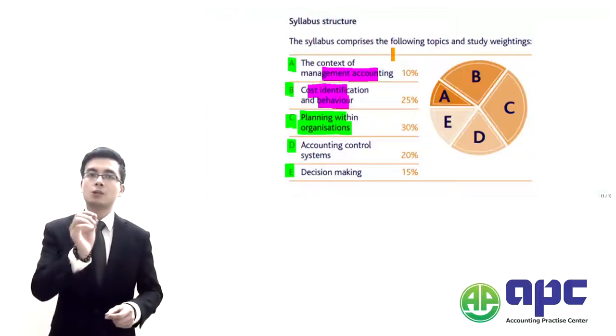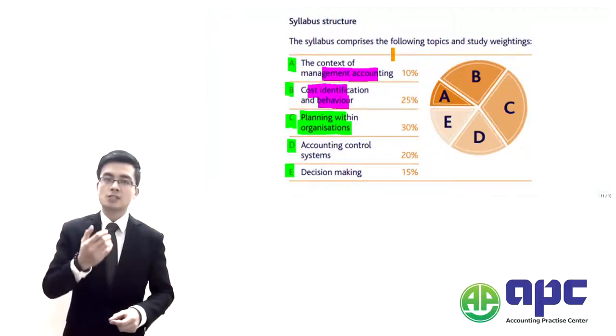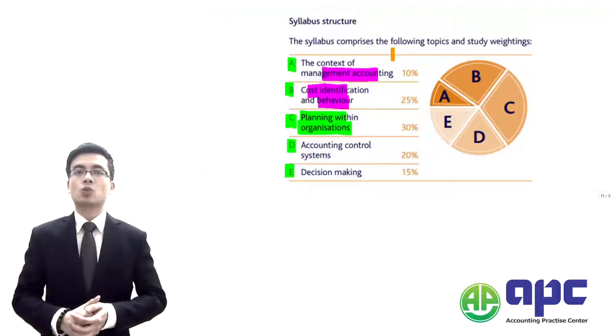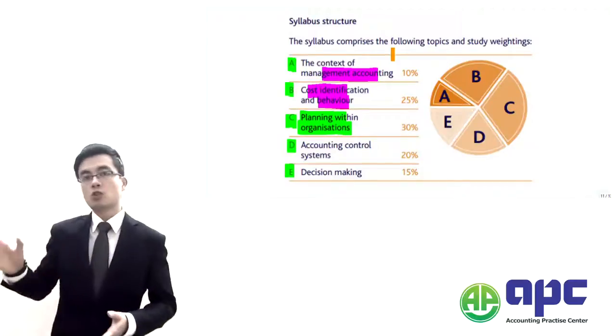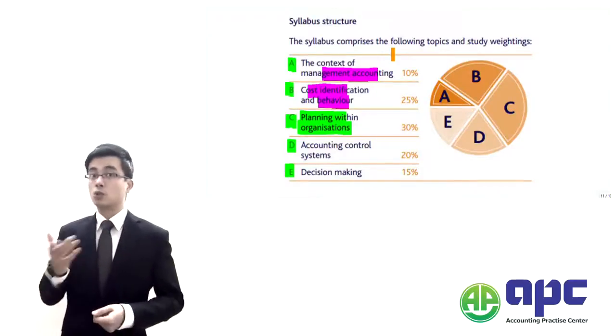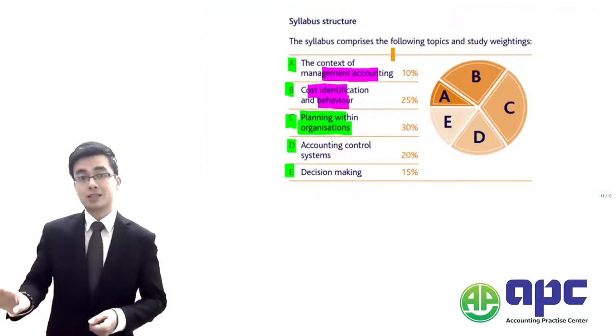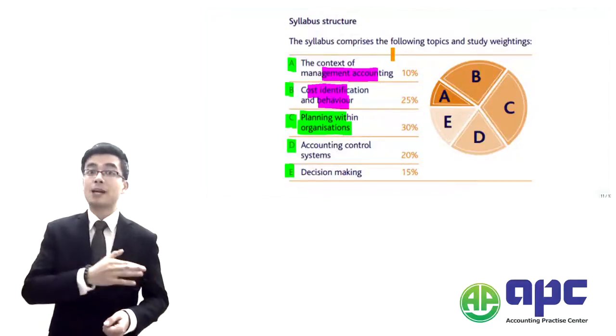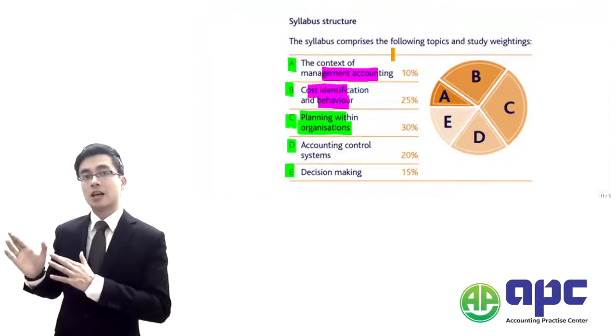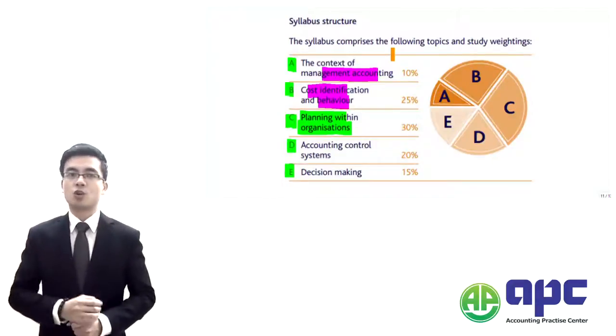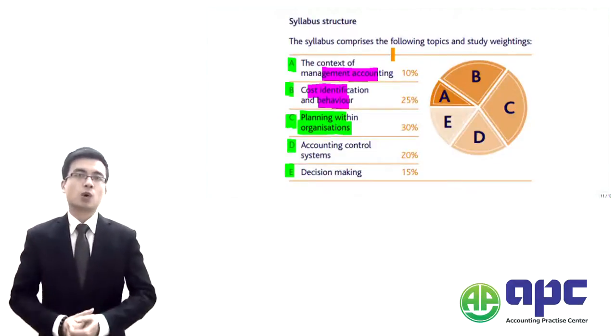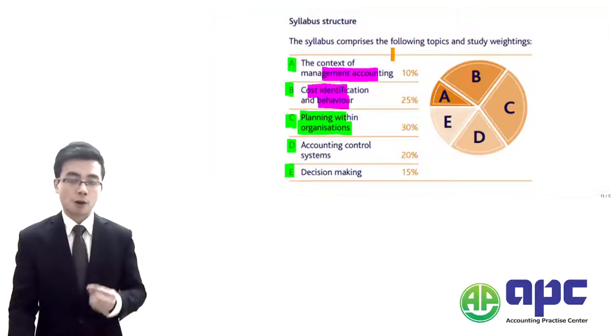What management accounting is going to do is try to adjust this particular situation by making some adjustments. For example, we're going to reward you with $3 as mentioned, but we're going to add the expenditures that we've spent that are not controlled by yourself. Of course, we're going to reward you with that particular amount. That's what I mean by management accounting. It's very important for the business.